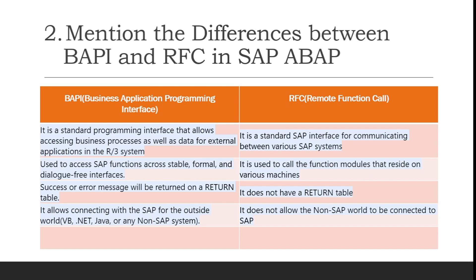Question number two: What are the differences between BAPI and RFC? Many candidates don't know what BAPI and RFC are. BAPI stands for Business Application Programming Interface and RFC is Remote Function Call. BAPI is a standard program interface that allows accessing business processes as well as data for external applications in the RFC system. Whereas RFC is a standard SAP interface for communicating between various SAP systems — meaning RFC is only used for SAP-to-SAP communication, whereas BAPI is used for communicating between non-SAP systems and SAP systems.